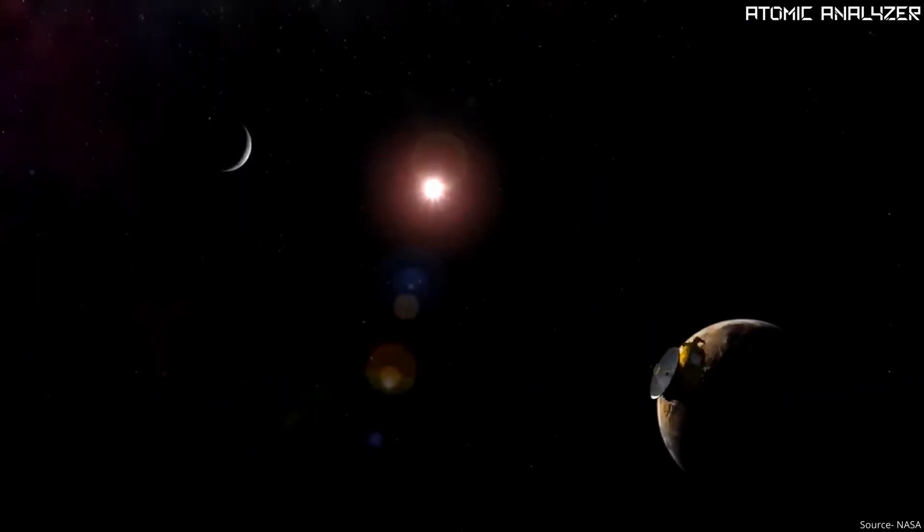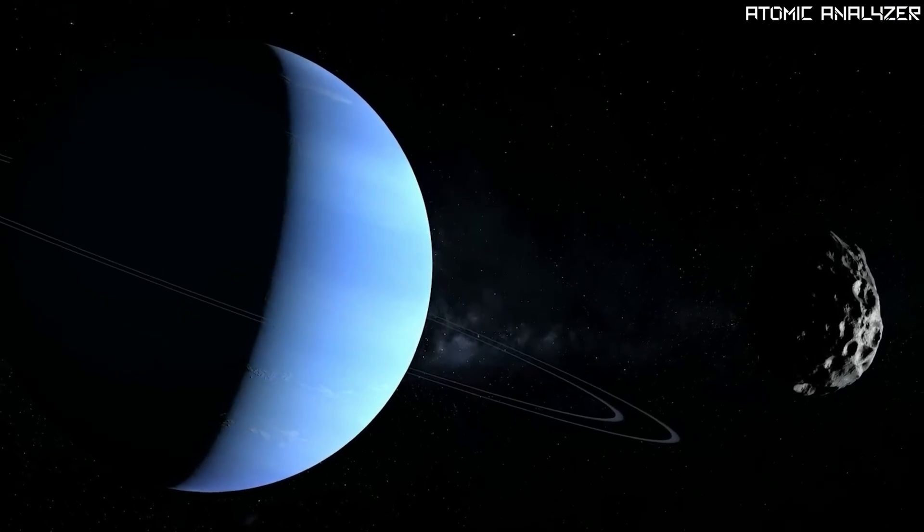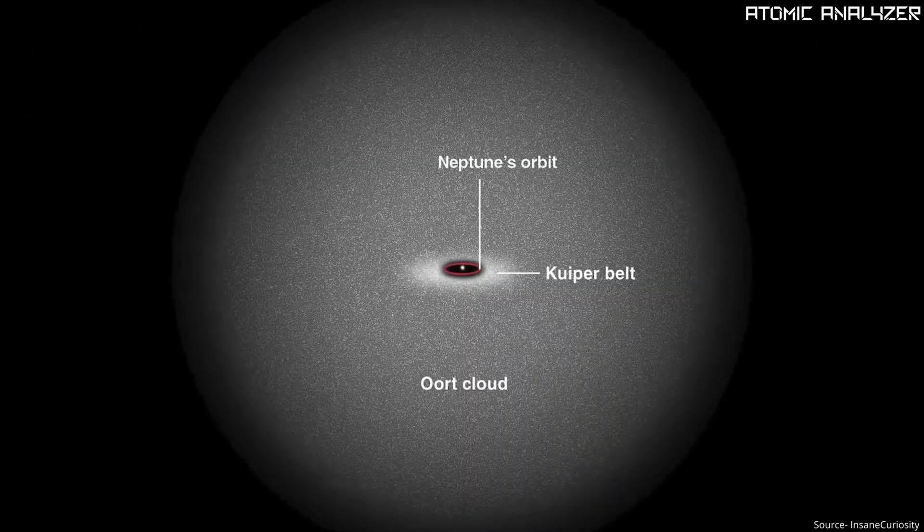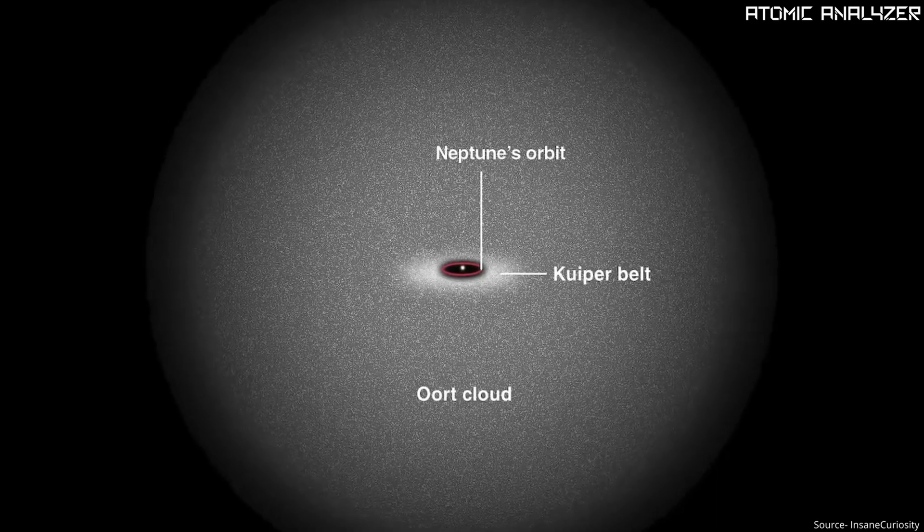But as we move further out from the sun, there is this cool place called Neptune, and beyond Neptune is where the Kuiper Belt begins.